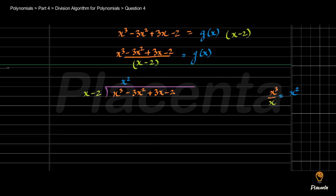Now we multiply x square by the divisor, giving x cube minus 2x square. After interchanging signs and subtracting, we get minus x square plus 3x minus 2. In this new equation, we divide minus x square by x, which gives minus x. So minus x becomes the second part of our quotient.